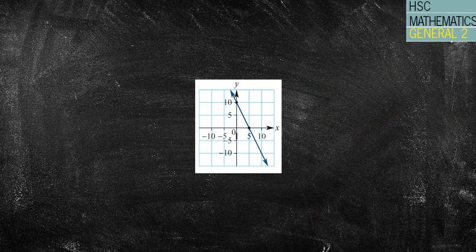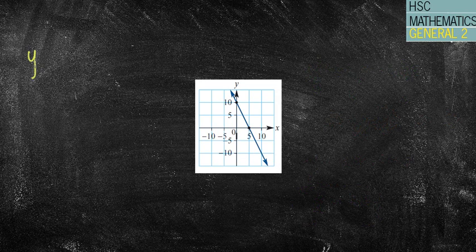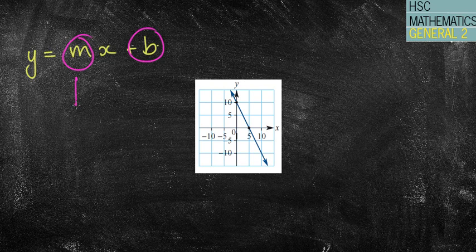Next one. Again, have a crack at it guys. So hopefully you wrote down y equals mx plus b to start with. Once again, we need to find the m value and the b value. m comes from doing my rise over my run. I'm going to take this point and this point. They're really easy points to take. I'm going to draw my right angle triangle in. My rise in this case is 10 over my run is 5.